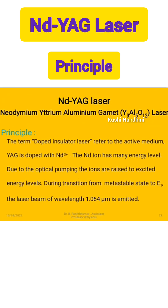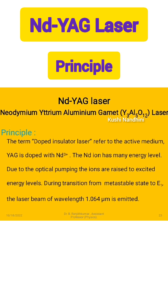Principle: The Nd:YAG doped insulator laser refers to the active medium. Yttrium Aluminium Garnet is doped with Nd³⁺ ions. The Neodymium ion has many energy levels. Due to optical pumping, the ions are raised to the excited state.